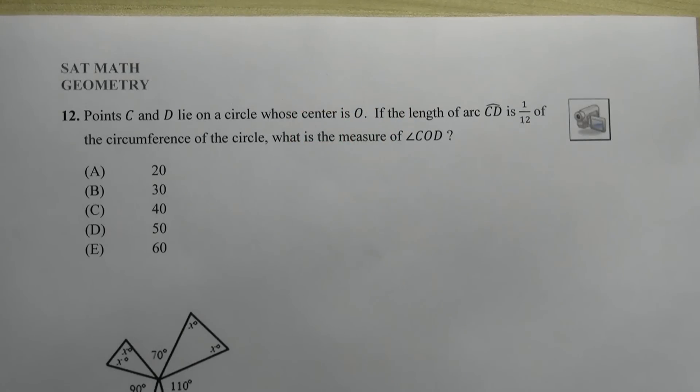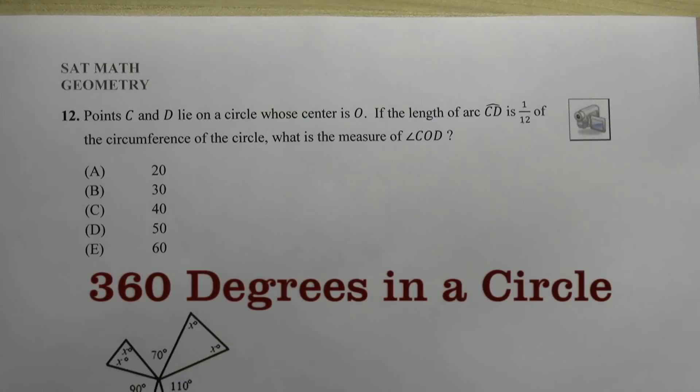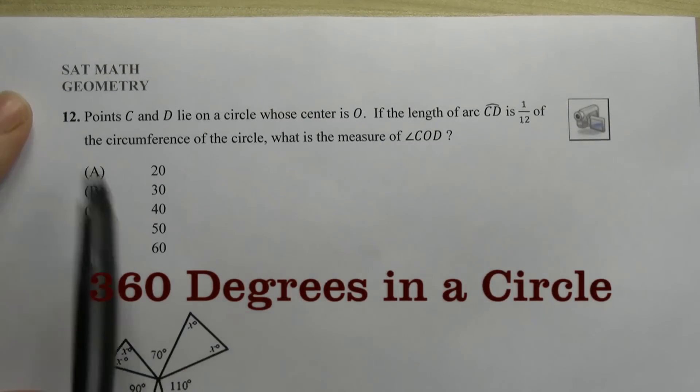Okay, so we're going to talk a little bit about applying the idea that there are 360 degrees in a circle. The first one is for number 12.